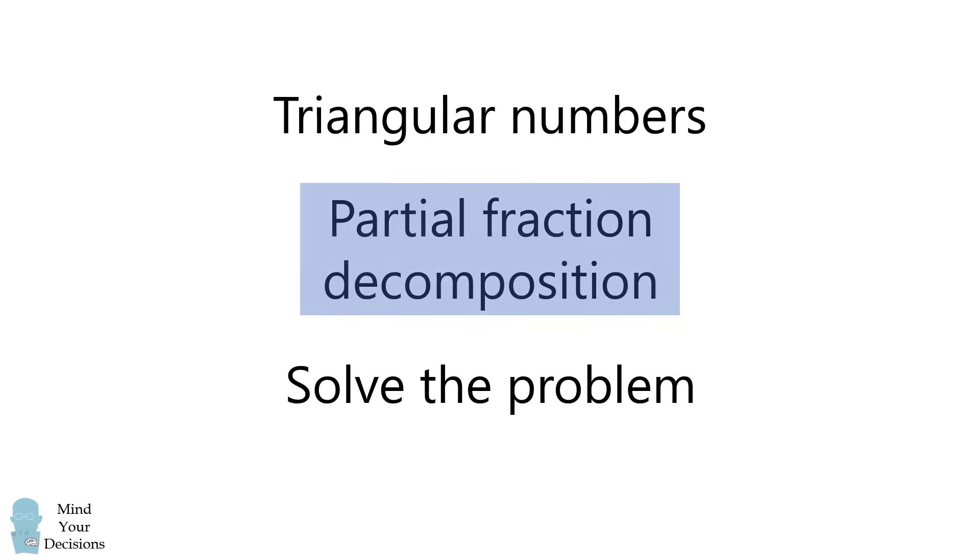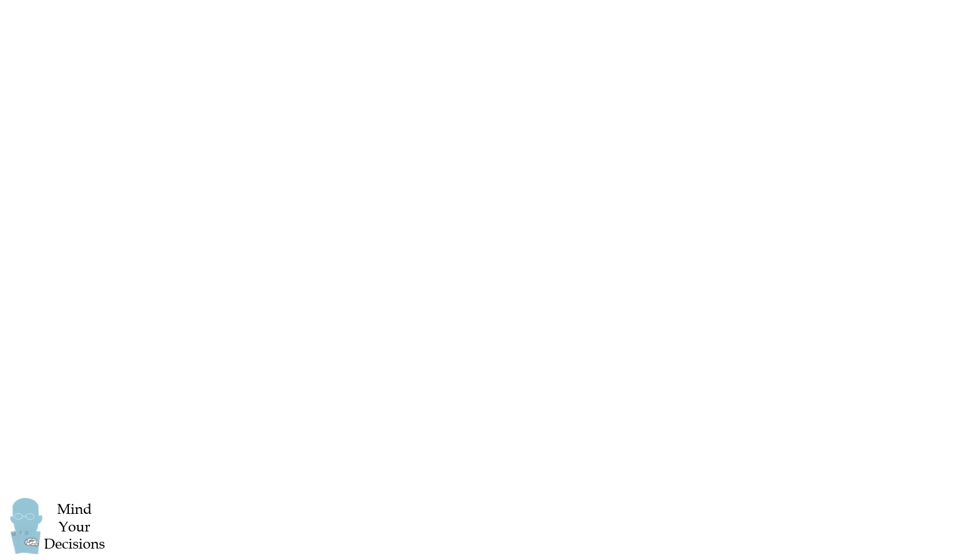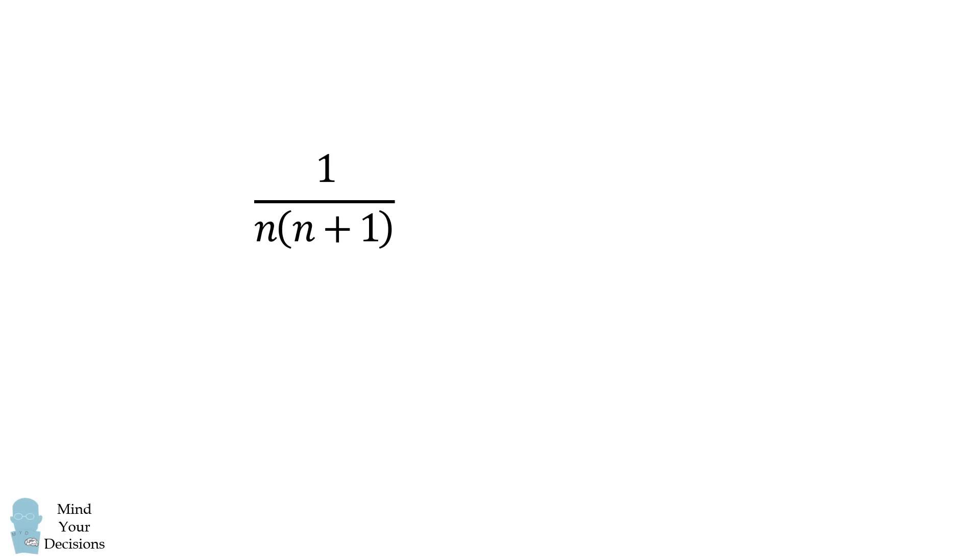Let's now go over a partial fraction decomposition. Suppose we have the fraction 1 divided by n multiplied by n plus 1. We want to write this in the following expansion. So one fraction will be a over n, and the other fraction will be some other number b over n plus 1.